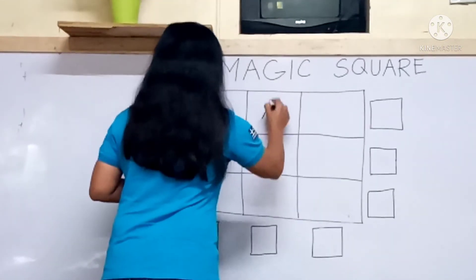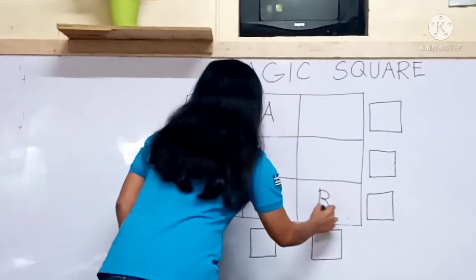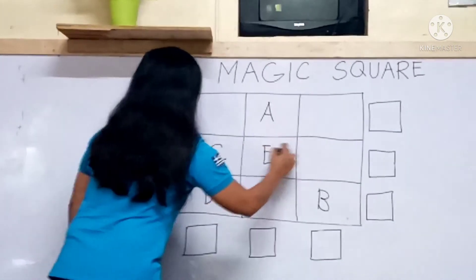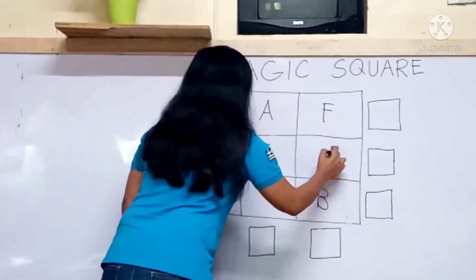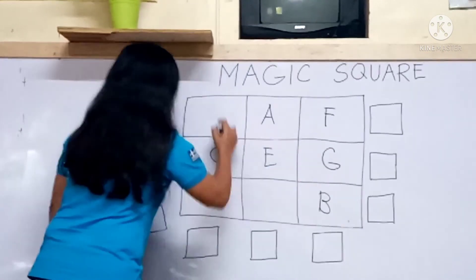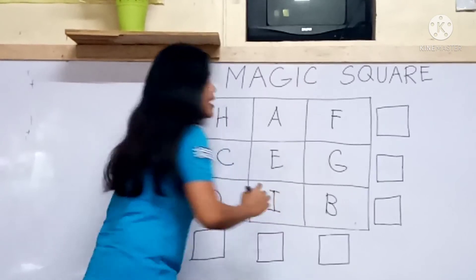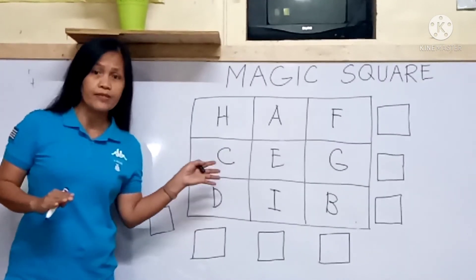You only have to familiarize the letters. A, B, C, D, E, F, G, H, I.